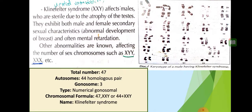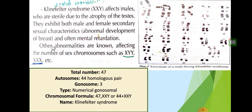Now, document F: the karyotype of a male having Klinefelter syndrome. Klinefelter syndrome has the chromosomal formula XXY — there is an extra X chromosome. This disease affects males due to the presence of the Y chromosome. These males are sterile due to the atrophy of the testes, similar to how Turner syndrome women have atrophy of the ovaries. They also show abnormal development of secondary sexual characteristics.